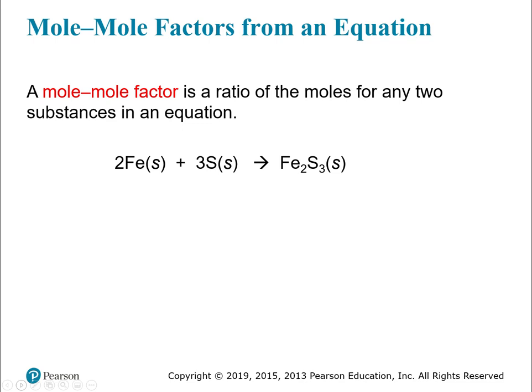To get there, you have to write what's called a mole-mole factor, which is just the ratio of moles for any two substances in an equation. If I wanted to write a mole-mole factor for the relationship between iron and sulfur, I would look at iron — which has a 2 — and sulfur, which has a 3. I write 2 moles of iron on top and 3 moles of sulfur on the bottom, directly from the equation. That is a mole-mole factor: for every 2 moles of iron, you need 3 moles of sulfur.